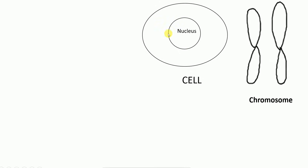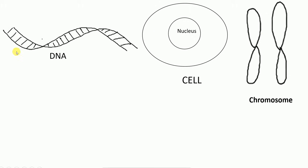In the nucleus, a chromosome is present. So now I'll talk about what a chromosome is and what DNA is. DNA is the double helical structure shown here in the picture, which is very long. This DNA is coiled and super-coiled around some proteins, and when condensed in this way, it takes the form of a chromosome.